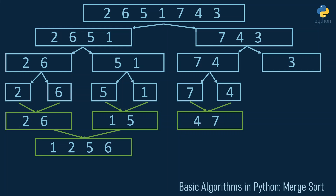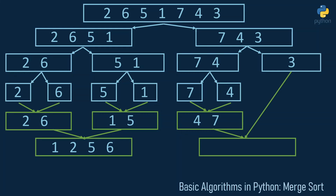Next we build a bigger array from four, seven, and three using the same procedure. We compare three and four, since they are the leftmost elements of the two arrays, see that three is less than four, and save three. There's nothing to compare four and seven to, and they are already in the right order, so we transfer them to the new array.